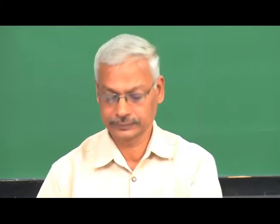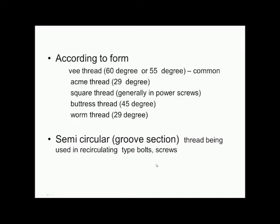Screw threads can be classified according to the direction of helix — whether they are right-handed or left-handed. According to the form, they are classified as V threads (normally 60° and 55° thread angle), Acme threads (29° angle), square threads (generally used in power screws), buttress threads, and worm threads.